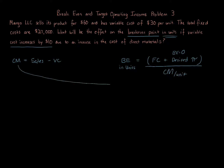If we know contribution margin goes into the break-even calculation and variable costs increase, that's going to have an effect on the break-even in units. The contribution margin will decrease, and if contribution margin decreases, the break-even number in units is going to increase. That makes sense, because if your variable costs increase, it's going to take more units to cover the fixed costs.